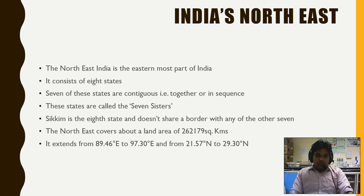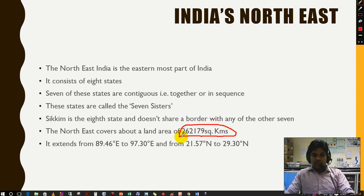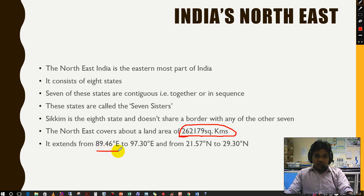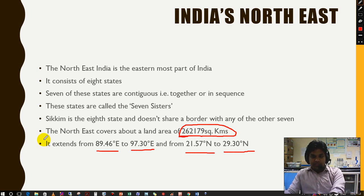Northeast India covers a land area of 2,62,179 square kilometers. The location coordinates are 89.46° East to 97.30° East and 21.57° North to 29.30° North. This is not extremely important to memorize but if you are curious enough you can note this data.